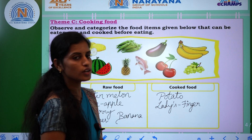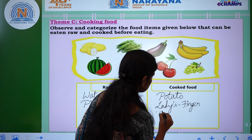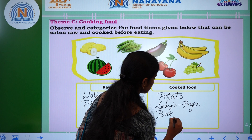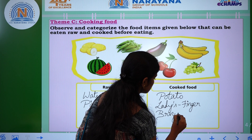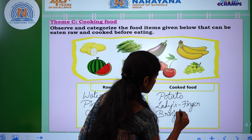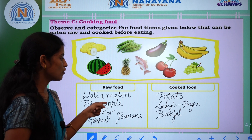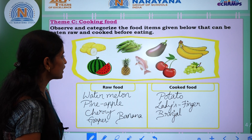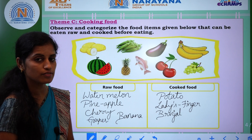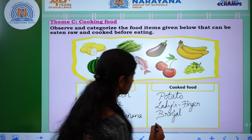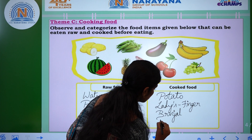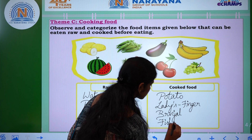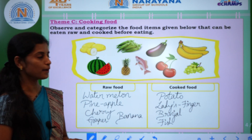Brinjal — B-R-I-N-J-A-L — brinjal. These are our raw and cooked food items. Finally, the last one is fish — F-I-S-H — fish.